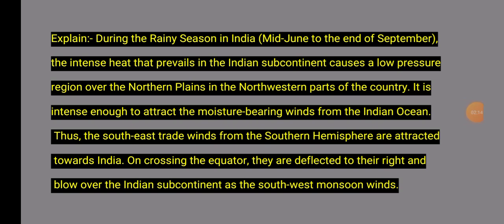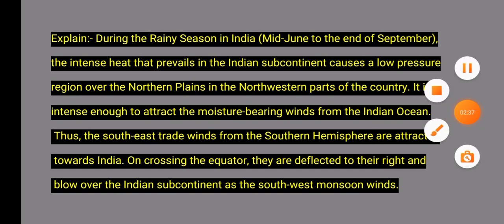Question 42 Explanation: During the rainy season in India (mid-June to end of September), intense heating of the Indian subcontinent causes a low pressure region over the northern plains and northwestern part of the country. This is intense enough to attract moisture-bearing winds from the Indian Ocean. Thus the southeast trade winds from the southern hemisphere are attracted toward India, crossing the equator and deflecting to the right, blowing toward the Indian subcontinent as southwestern monsoon winds.